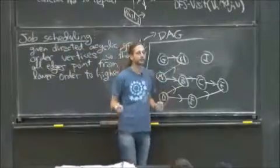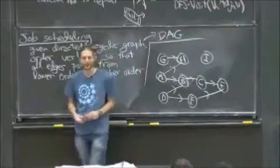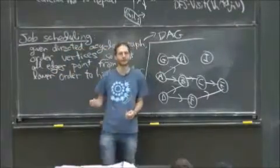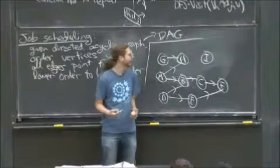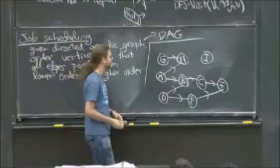And now, imagine these vertices represent things you need to do. The textbook has a funny example where you're getting dressed. So you have these constraints that say, I've got to put my socks on before I put my shoes on. And then I've got to put my underwear on before I put my pants on. All these kinds of things.